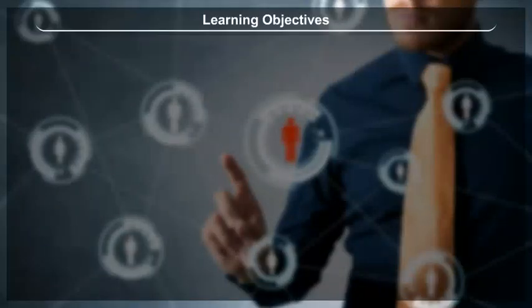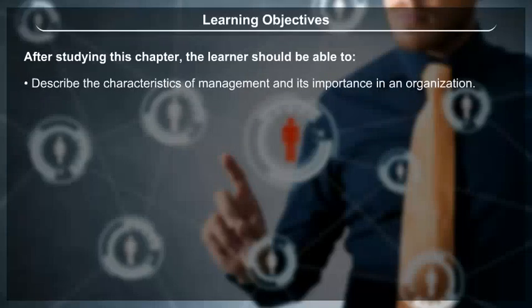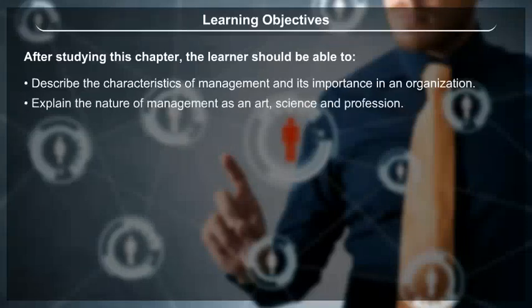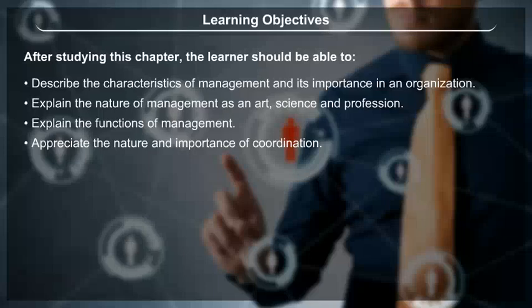Learning Objectives: After studying this chapter, the learner should be able to describe the characteristics of management and its importance in an organization, explain the nature of management as an art, science and profession, and explain the functions of management and appreciate the nature and importance of coordination.